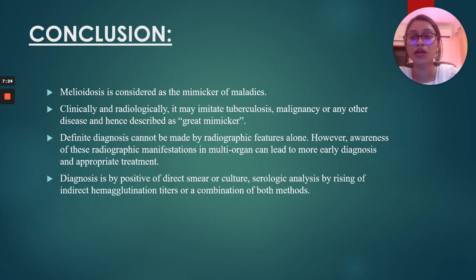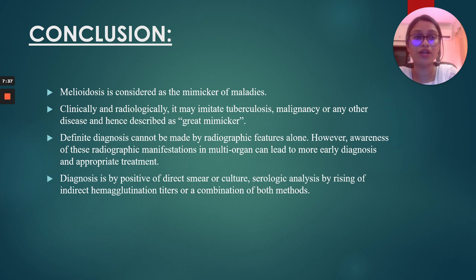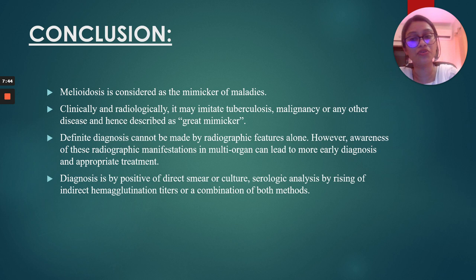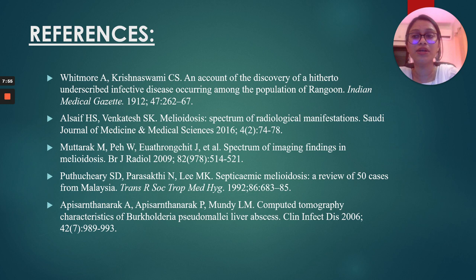In conclusion, meliodosis is considered a mimicker of maladies. Clinically and radiologically, it may imitate tuberculosis, malignancy, or any other disease — hence described as a great mimicker. A definite diagnosis cannot be made on radiographic features alone, but awareness of these manifestations can lead to early diagnosis and appropriate treatment. Diagnosis is mainly by positive smear or culture, serological analysis by rising indirect hemagglutination titers, or a combination of both. These are the references for this presentation.